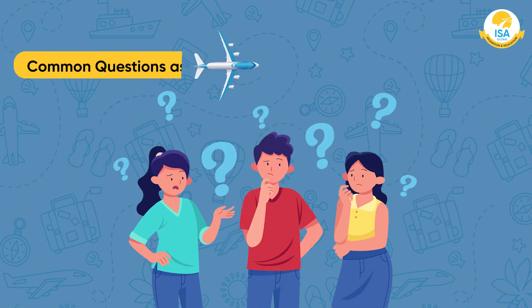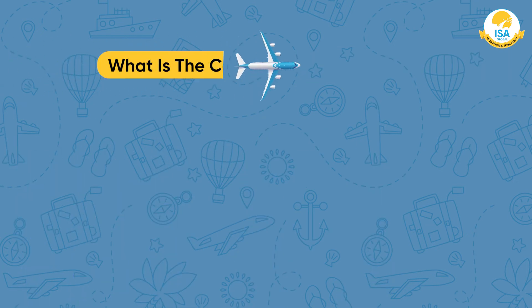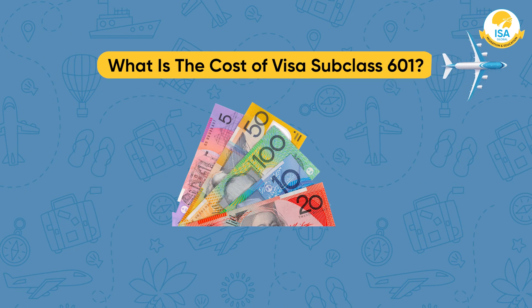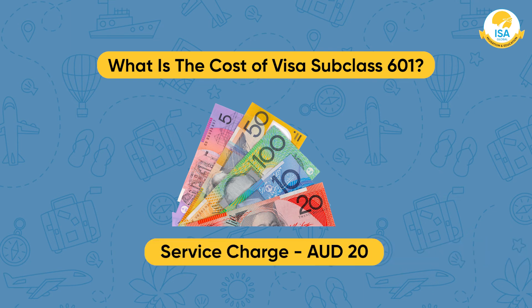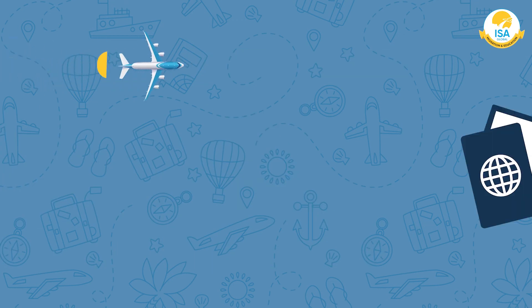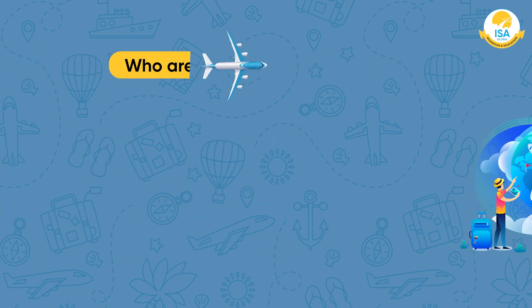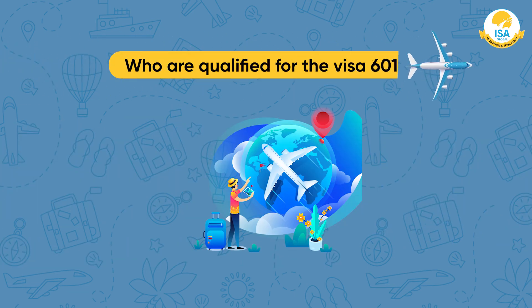Common questions asked by applicants regarding the ETA 601 visa: What is the cost of Visa Subclass 601? There is no processing fee for the ETA 601 visa — there is only a service charge of 20 Australian dollars. Is it a temporary or a permanent visa? The visa is a temporary one.